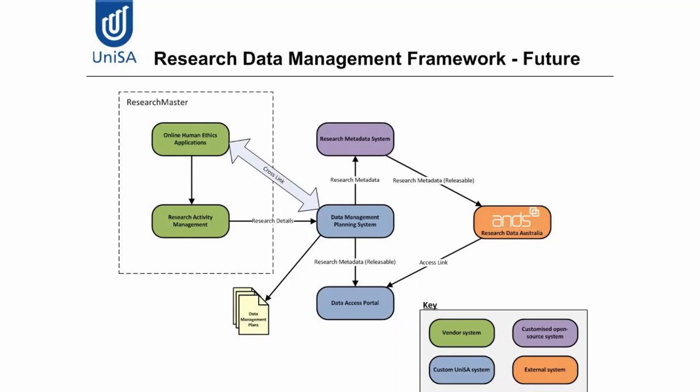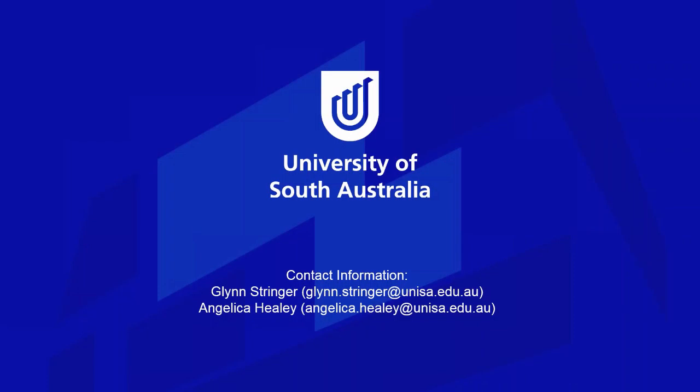This shows you the framework that we've created. Where we're going from here is that we want to make the relationship between online ethics and the data management planning system more integrated. To do this, we intend to create a cross-link which will allow, for example, if there's a data management plan, that the information from that plan can be used to populate the human ethics application, so that the researcher doesn't have to re-enter that information. Conversely, if they've entered information in the human ethics application, we want to import that into the data management planning system to avoid double entry. We have held off on this cross-link because of the changes made at the NHMRC with the human research ethics application form.